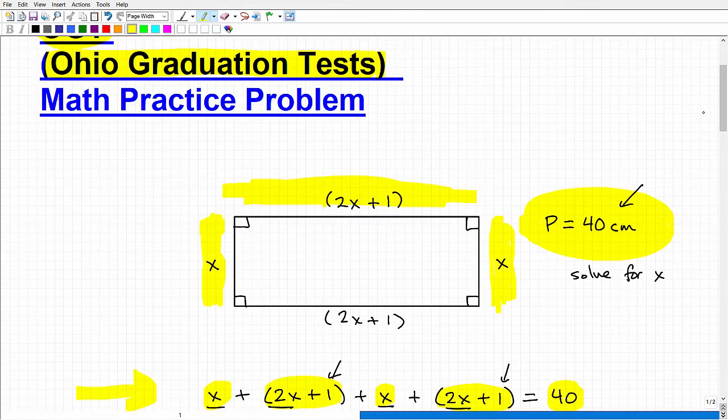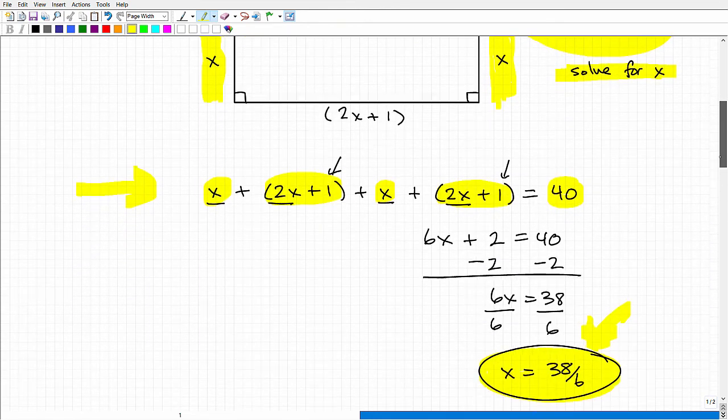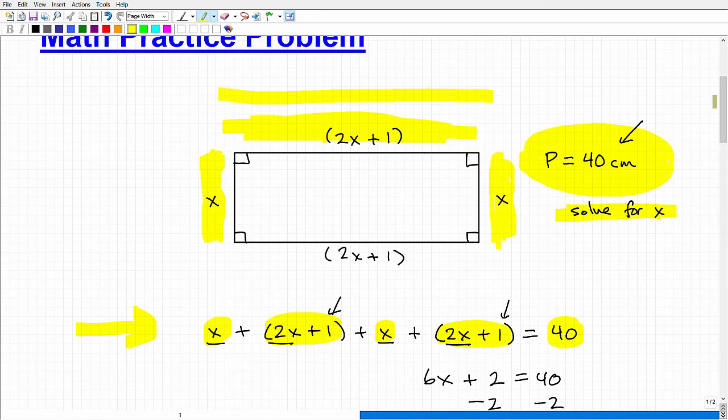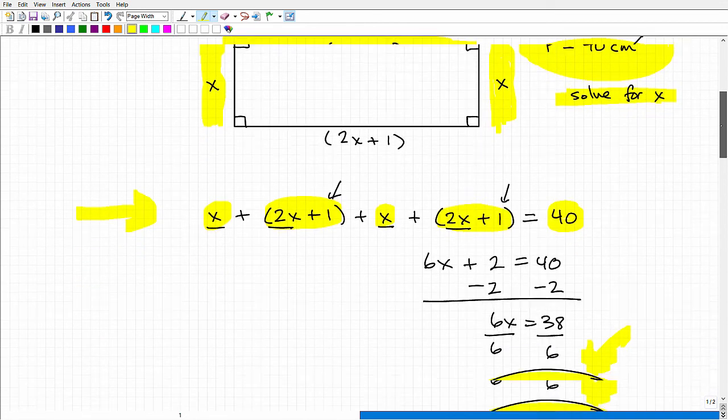With these math problems, you have to be very careful what the question is asking. Sometimes students solve for x, but that's not what they're asking. They might be asking for this length, which means you have to do additional steps. They get caught up in solving for a variable and forget to do something with it. If you got this right, excellent. If you needed help, no problem. If you're totally lost, use this as feedback.